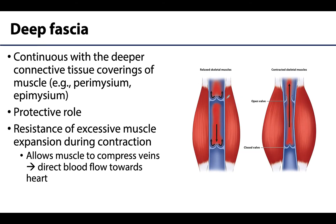A bit more about deep fascia: this is grossly visible connective tissue, and importantly it tends to be continuous with deeper connective tissue coverings of the muscle — such as the perimysium and epimysium — in addition to being connected to the periosteum that surrounds the bone.